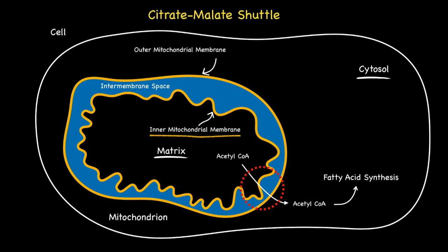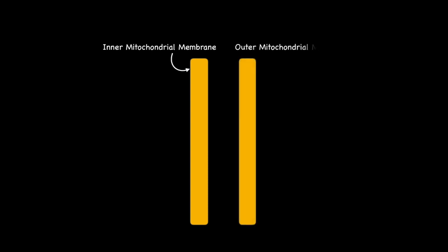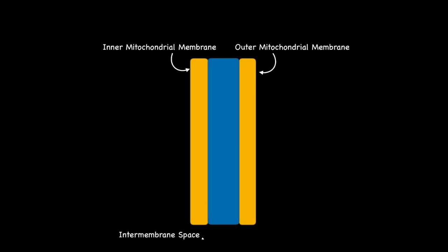Let's now draw an enlarged version of this highlighted region representing the inner and outer mitochondrial membranes so we can look at the finer detail of how this transport system works. Let's begin with a representation of an enlarged segment of the inner and outer mitochondrial membranes and the inter-membrane space. In short, this outer region separates the matrix from the cytosol.